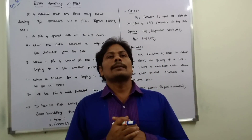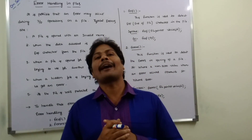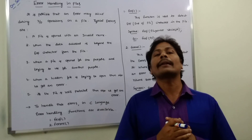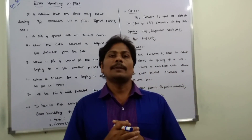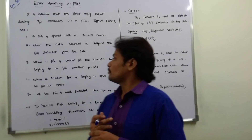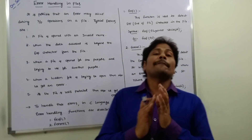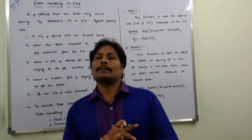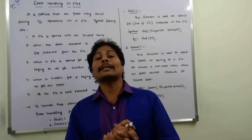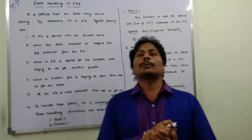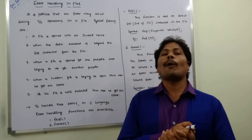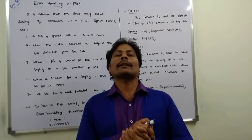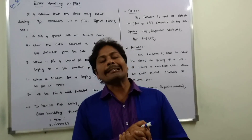The third error is when a file is a hidden file but you try to open that hidden file — an error may occur. The fourth point is if the file is write-protected. If a file is write-protected, no operation can be performed on it, and attempting any operation will result in an error.